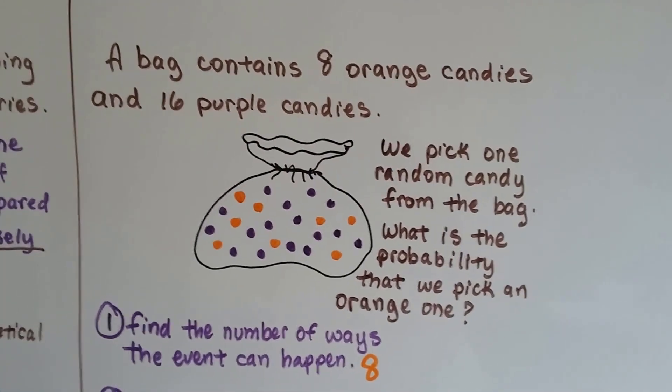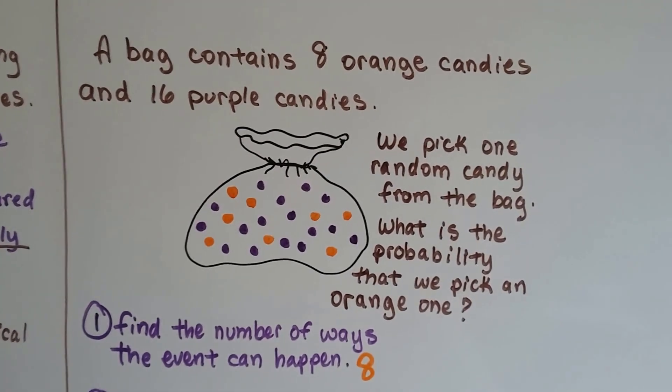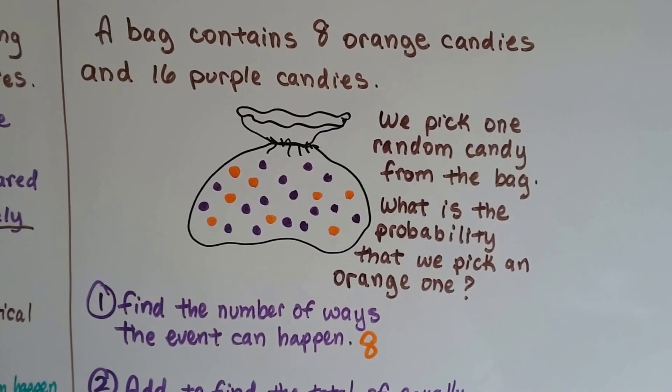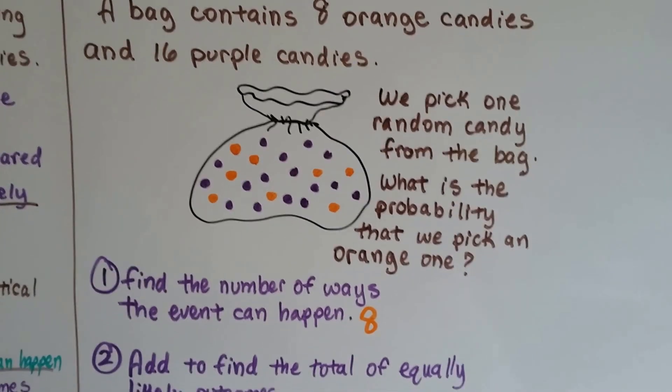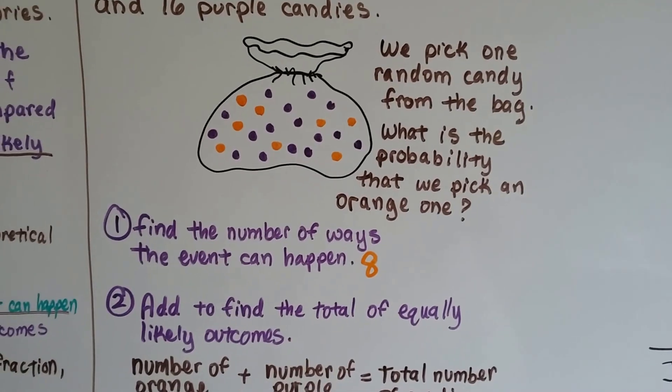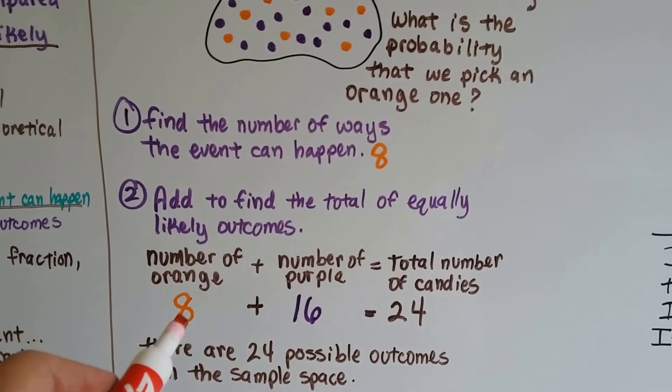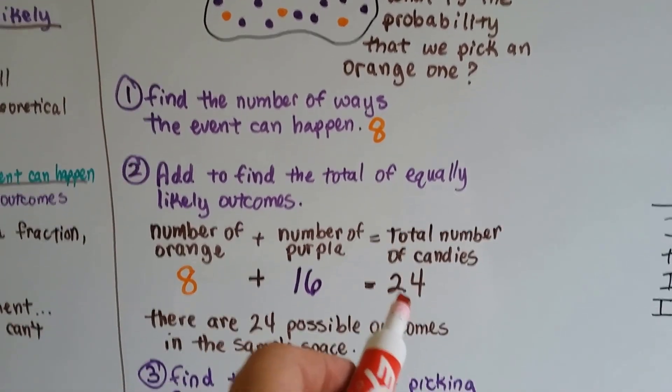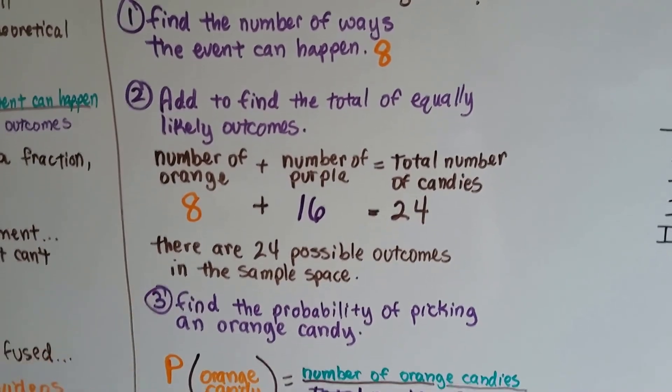A bag contains 8 orange candies and 16 purple candies, so we pick one random candy from the bag. What's the probability that we pick an orange one? We find the ways the event can happen. 8, there's 8 pieces of orange candy. We add to find the total of equally likely outcomes. There's 8 orange ones, there's 16 purple ones, so the total number of candies is 24. There's 24 possible outcomes in the sample space.